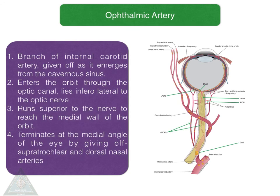The ophthalmic artery is a branch of the internal carotid artery, given off as it emerges from the cavernous sinus. The artery enters the orbit through the optic canal and lies inferolateral to the optic nerve. It then runs superior to the nerve to reach the medial wall of the eyeball, where it terminates at the medial angle of the eye by giving off two branches: the supratrochlear and the dorsal nasal arteries.